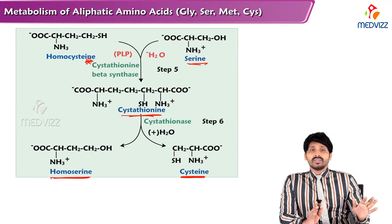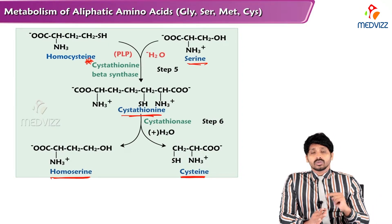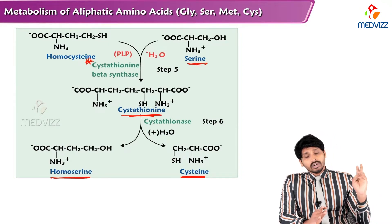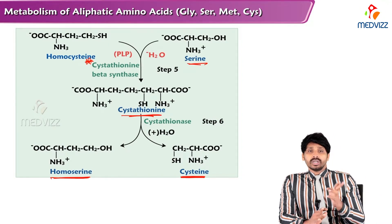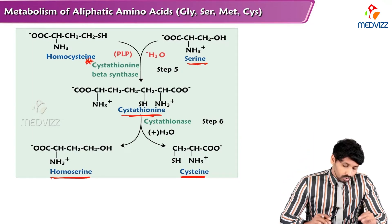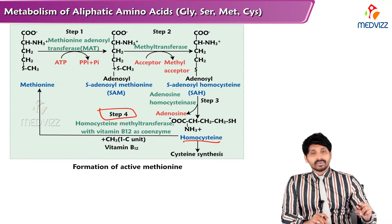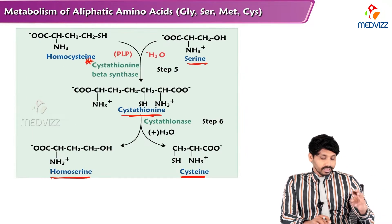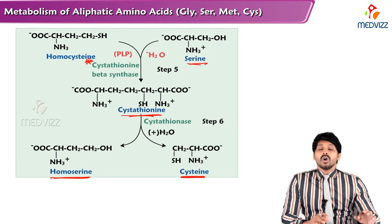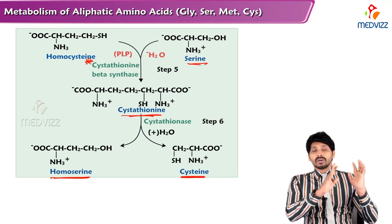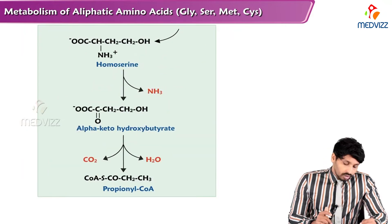If Methionine is not provided in the diet, you are missing two amino acids, which is why Methionine must be included in your diet. The main enzymes to note here are homocysteine methyltransferase and Cystathionine beta-synthase, which explains how Cysteine is synthesized from homocysteine.